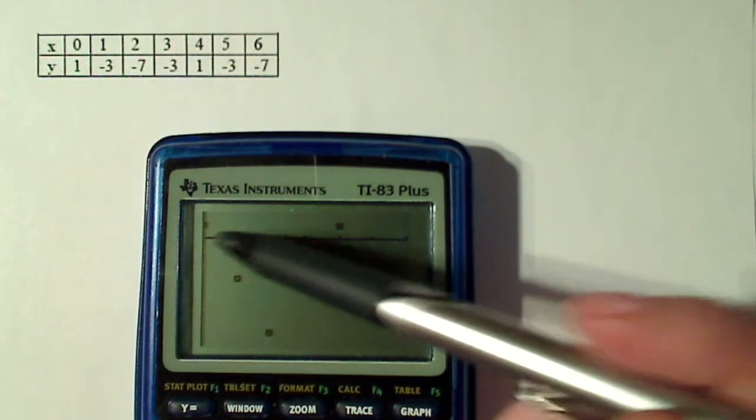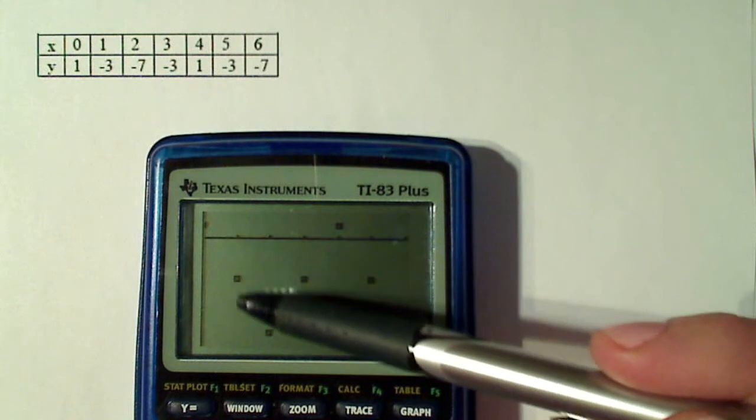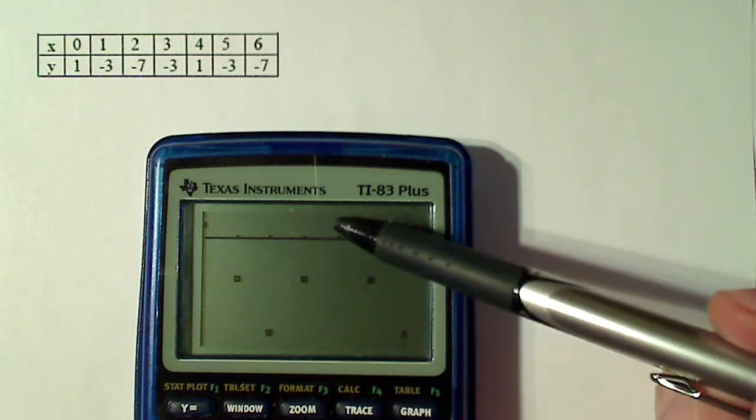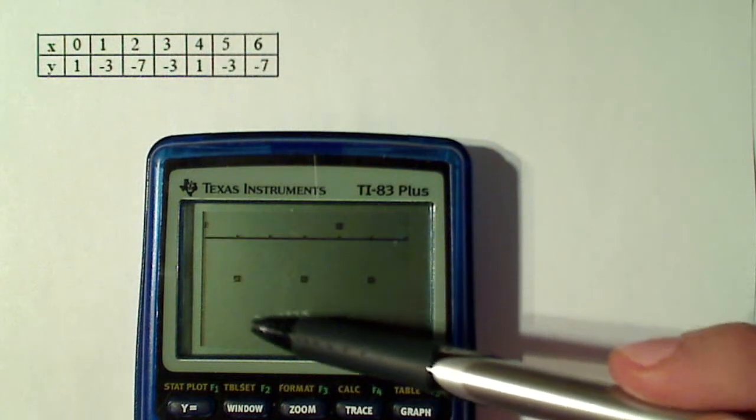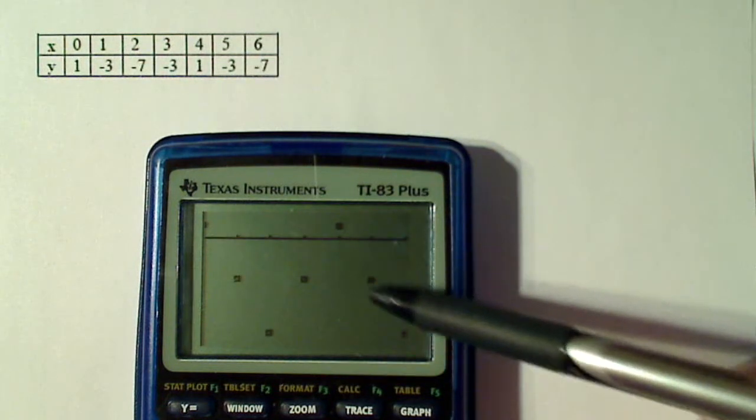Okay. Now this actually looks like a cosine graph, but it's not one period or two periods. It looks like there's one period and then there's a half a period.